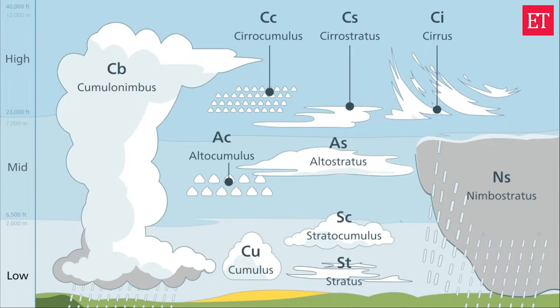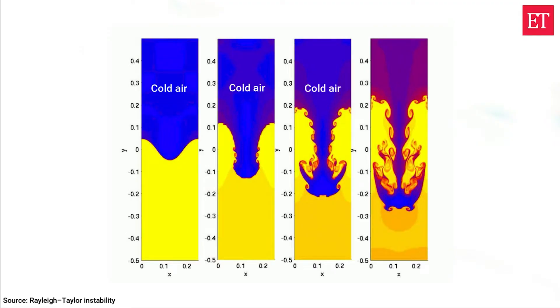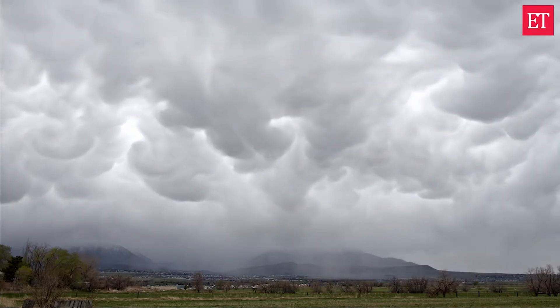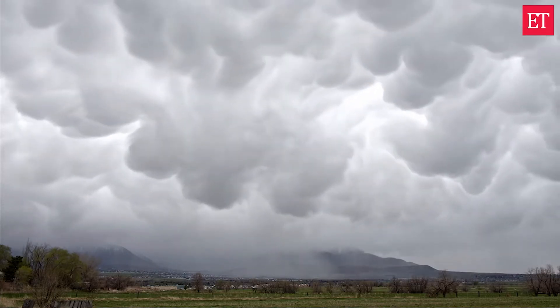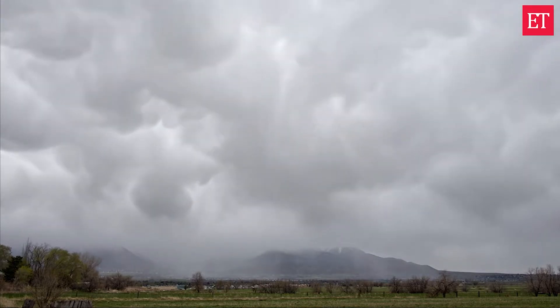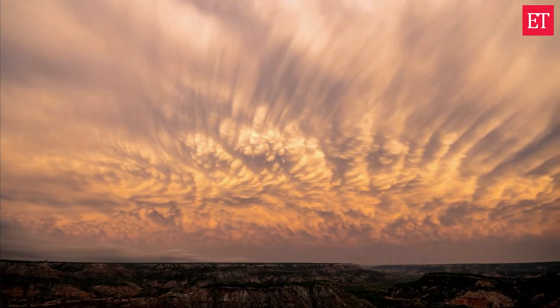Mammatus clouds don't form like the others — they can only appear on a large cumulonimbus cloud with a developed anvil. Inside this cloud, there are areas where the air is much colder than the air outside, making the air in the cloud descend. If it descends under the cloud, it takes the particles of water and ice the cloud consists of, forming the mammatus cloud. When descending, the air heats up, so at some point mammatus clouds stop and just remain hanging from the parent cloud.